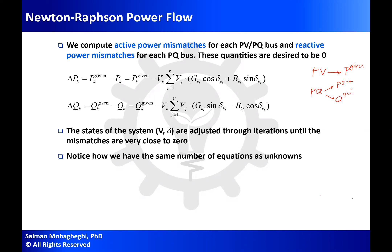Now I create power mismatch equations. Recall that when finding f(x) = b, I form a mismatch equation b - f(x), which is multiplied by the Jacobian matrix. Here, B would be the given values of P and Q, and f(x) would be the equations for active power and reactive power at node k. For active power, I have the given value minus the equation — referred to as F_P at node k to indicate it is a nonlinear function.